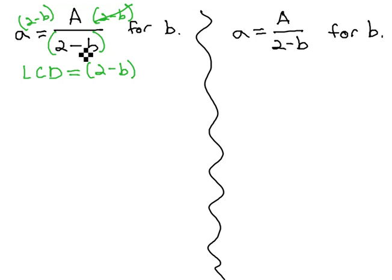When we do this, the 2 minus b's will divide out of the right side, and we're just left with a times 2 minus b equals capital A. An interesting thing to note at this point is that capital A and lowercase a do represent different variables. Quite often in formulas, we'll see a capital or a lowercase letter representing different quantities, so we want to make sure we keep them separate.